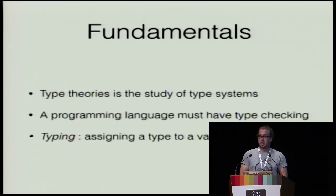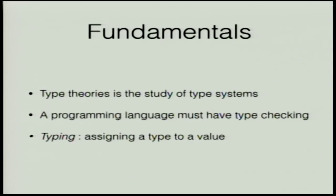Let's dig quickly into some fundamentals. Type systems are studied by type theories — lots of math and computer science. A programming language needs type checking in place, and typing means assigning a type to a value. Type checks could be done at runtime, at compile time, or manually annotated in source code — you declare the type before a variable. Or the type system could automatically infer the type without you having to declare it.